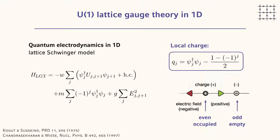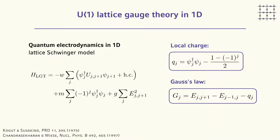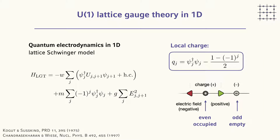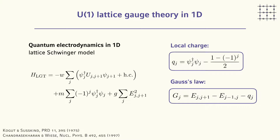We have charges on the vertices of the lattice decomposed into even and odd sites — depending on occupation, we have no particle, an electron, or a positron. The electric field is represented by arrows, with red being negative and green positive. One challenge common to many quantum simulation implementations is that the Hilbert space of the electric field is infinite, which is why we truncate it — this is the quantum link model representation. Gauss law defines the relation between the electric field difference across neighboring bonds and the charge in the center.